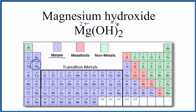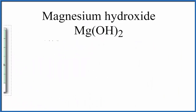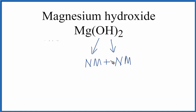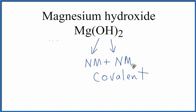Let's talk briefly about the hydroxide ion. So we said oxygen, that was a non-metal. And then hydrogen is also a non-metal. So when we have a non-metal plus a non-metal, that's going to be a covalent bond, also called a molecular bond sometimes.